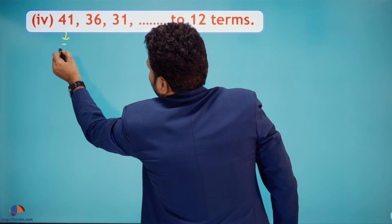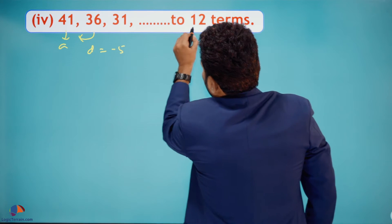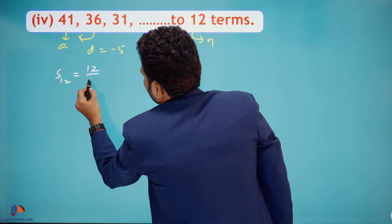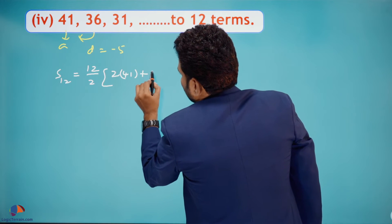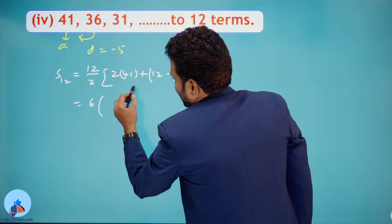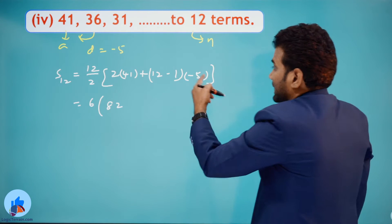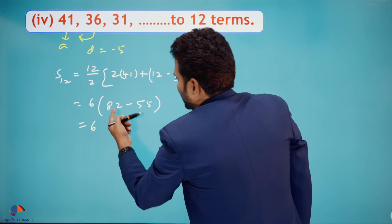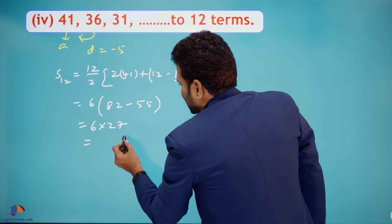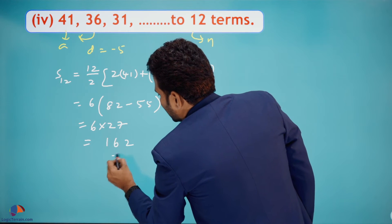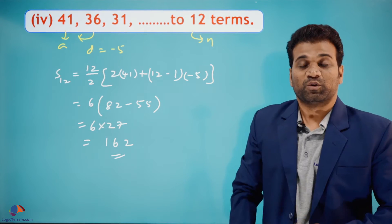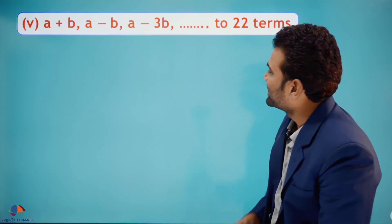The next sequence has a = 41, d = 36 − 41 = −5, and n = 12. So S12 = 12/2 × (2×41 + (12−1)×(−5)) = 6 × (82 + 11×(−5)) = 6 × (82 − 55) = 6 × 27 = 162. Therefore the sum of the first 12 terms of this arithmetic progression is 162.